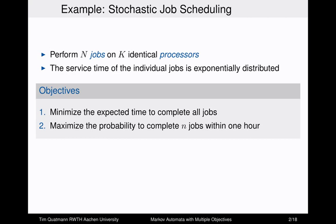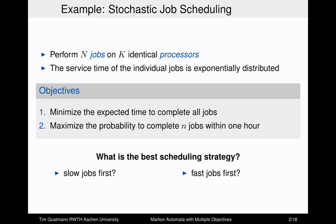Now the task is to find a good schedule. But to do this, we first want to know which objective we want to achieve for this system. We consider two objectives: first, we would like to minimize the expected time to complete all jobs, and secondly, we want to maximize the probability to complete n jobs within an hour.